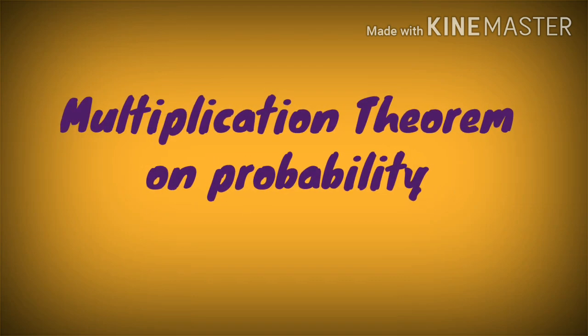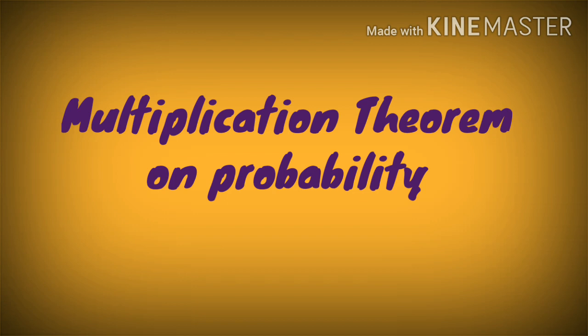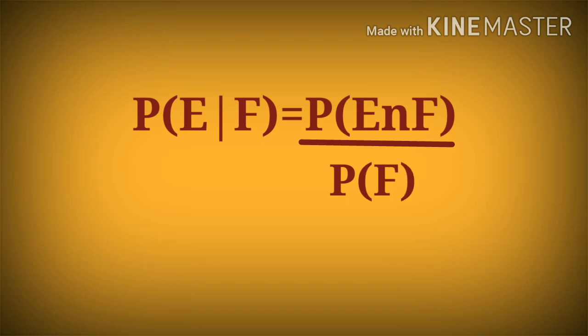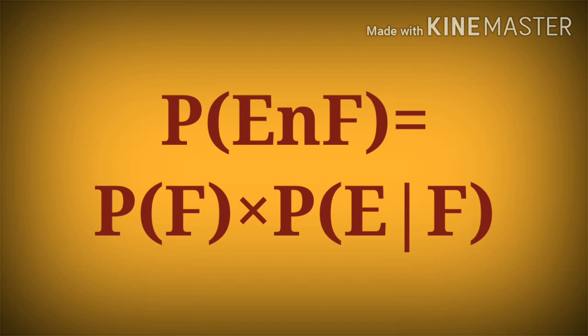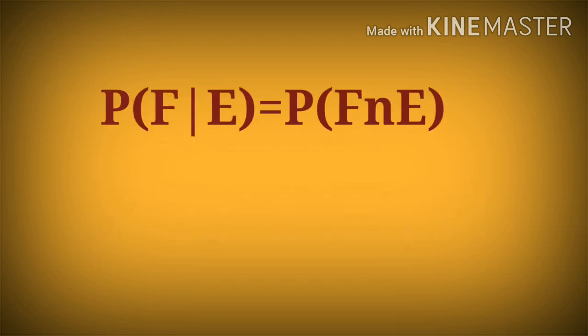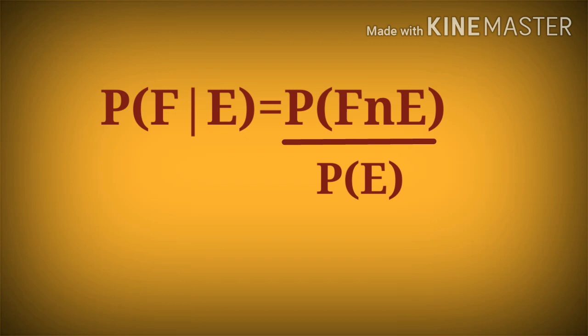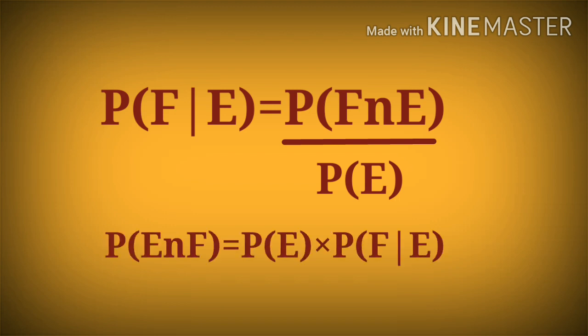This is the Multiplication Theorem on Probability. The first point is the equation. P of E given F — this is the key formula. This is the multiplication theorem of probability. This is the equation.